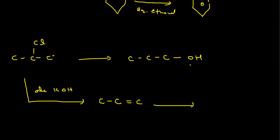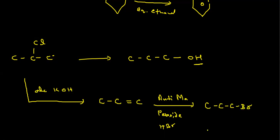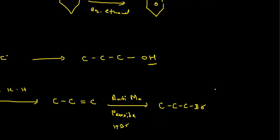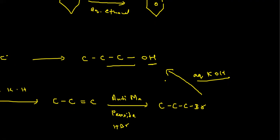We want OH at the end side, so of course we conduct anti-Markovnikov. We take peroxide and HBr. Br comes at the end carbon, converting to 1-bromopropane. After that, we do aqueous KOH — KBr is removed via nucleophilic substitution and OH comes at this side. This is very simple, and we can solve such type of question very easily.